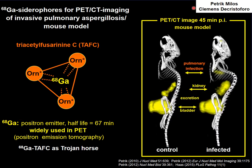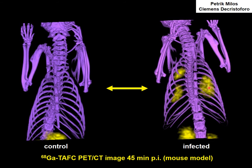Here you can see a combination of positron emission tomography with computer tomography. The image was taken 45 minutes after injection of one microgram gallium-68-labeled TAF-C in a control mouse and in a mouse infected with Aspergillus fumigatus. The majority of the label is found in kidneys and in the bladder because TAF-C is eliminated from the body mainly via renal excretion. But if you look closely, you can find the label also in the infected lungs. The close-up shows nicely Aspergillus fumigatus taking up gallium-labeled TAF-C because it's thinking that this is its iron source. So gallium-labeled siderophores can be used for in vivo imaging of fungal infections.